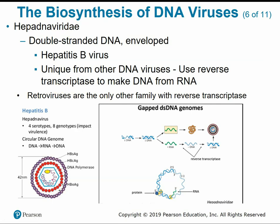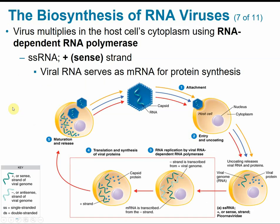Retroviruses are the only other known family of viruses that use reverse transcriptase — an enzyme that does transcription in reverse, going from RNA back to DNA instead of the normal DNA to RNA to protein. The biosynthesis of RNA viruses follows essentially the same pattern as DNA viruses, except RNA viruses multiply in the cytoplasm using RNA-dependent RNA polymerase. The viral genes cause the host cell to produce this enzyme, which catalyzes synthesis of a complementary RNA strand.